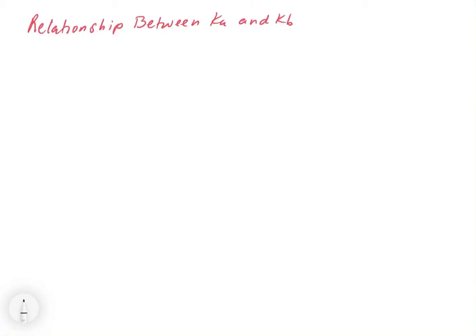In this video, we're going to look at the relationship between Ka and Kb. Through the process of the fact that a conjugate acid and a conjugate base are inherently linked in their chemistry, it turns out that we can come up with a relationship for Ka and Kb.